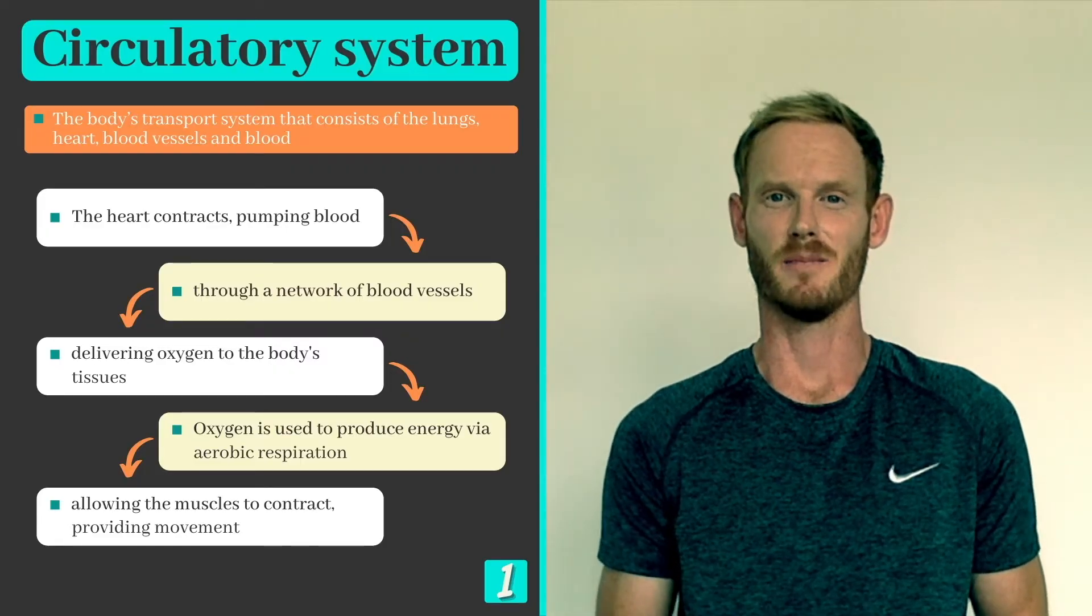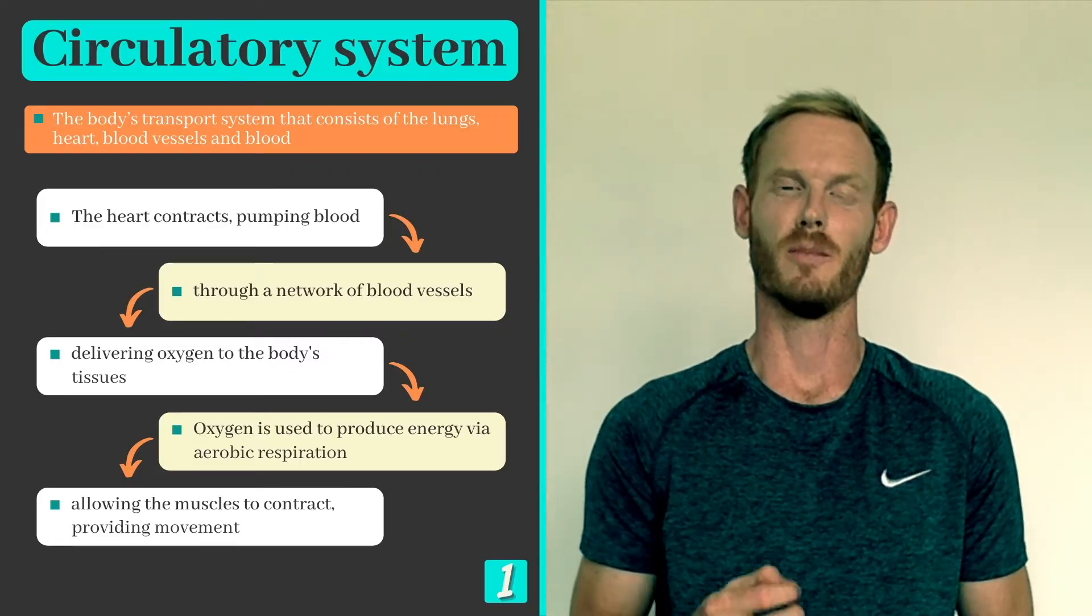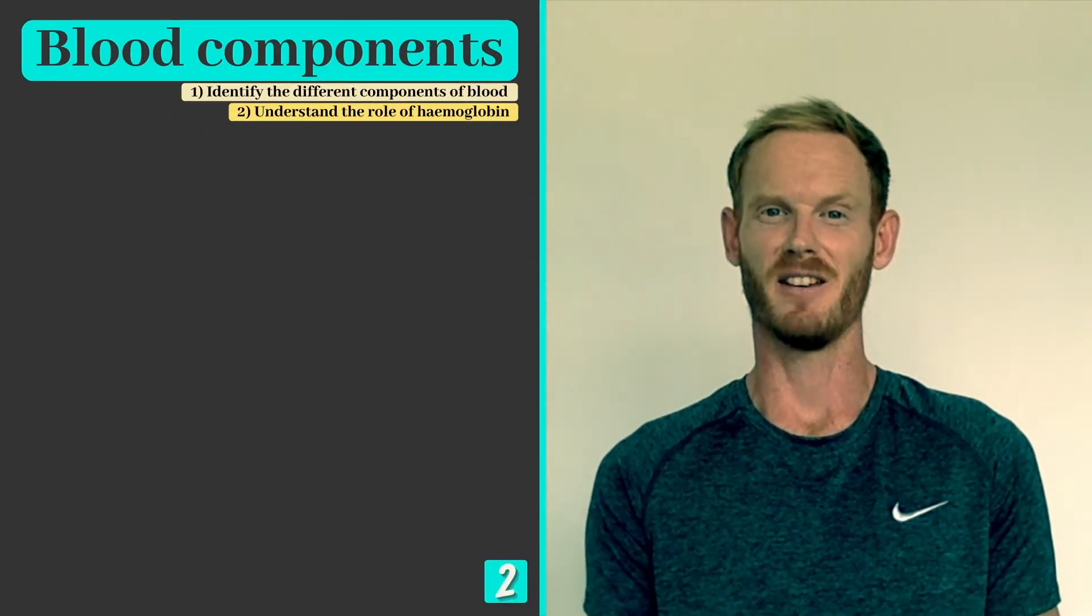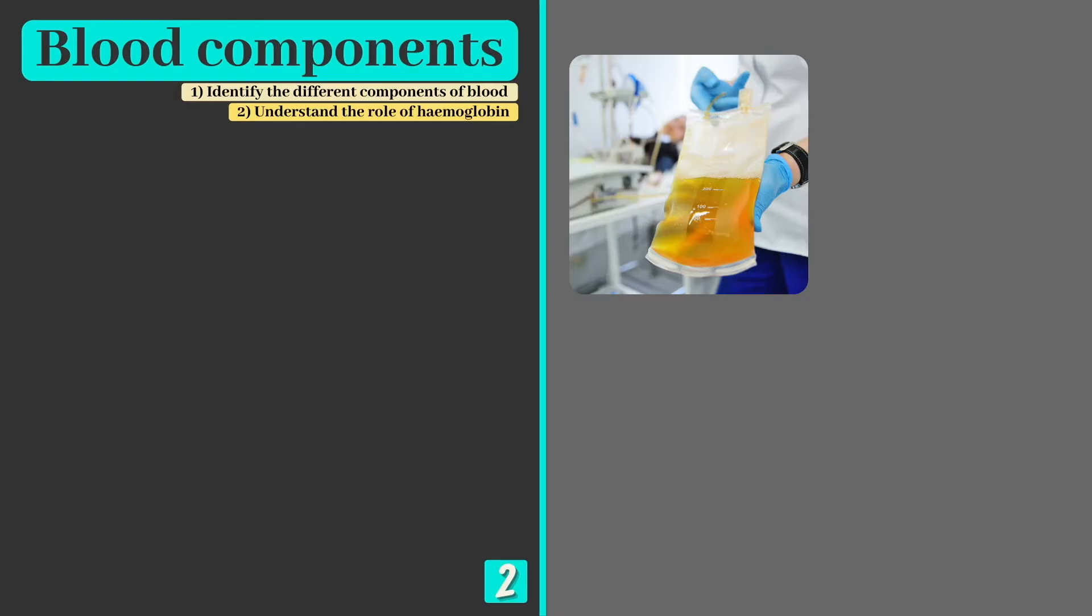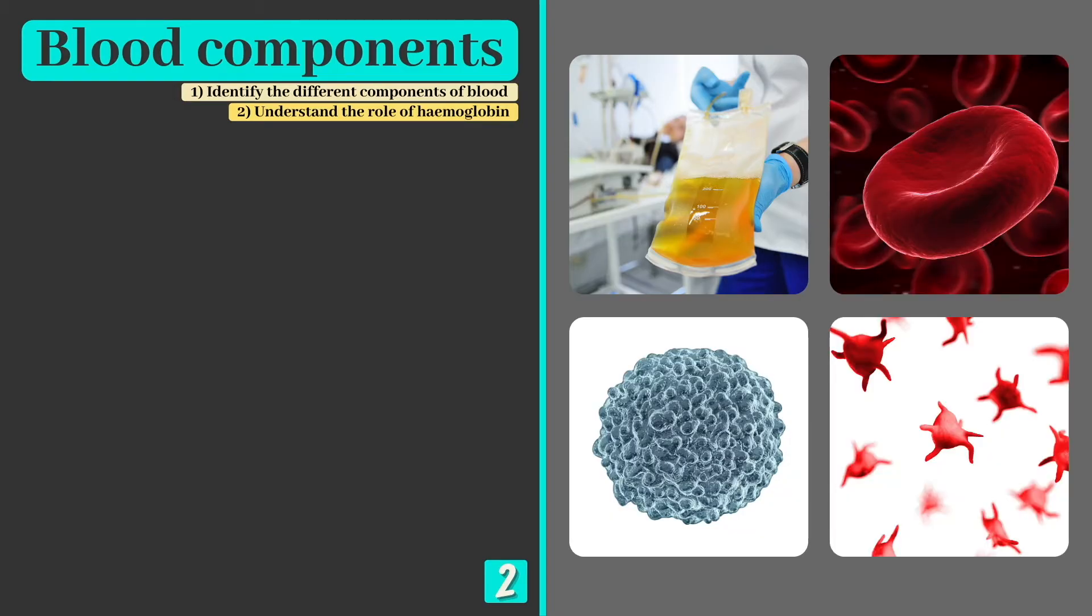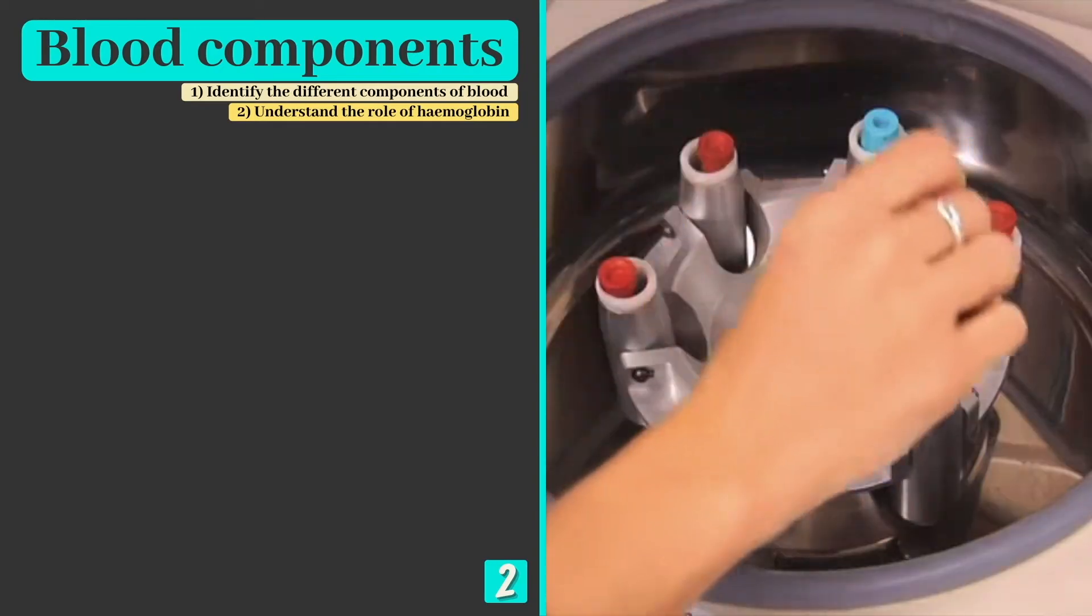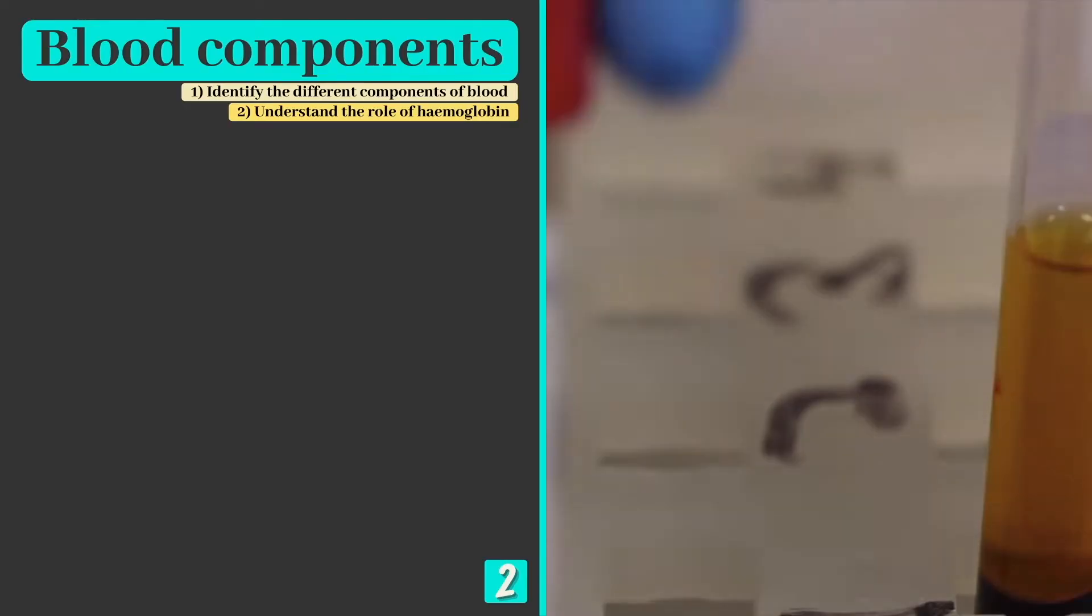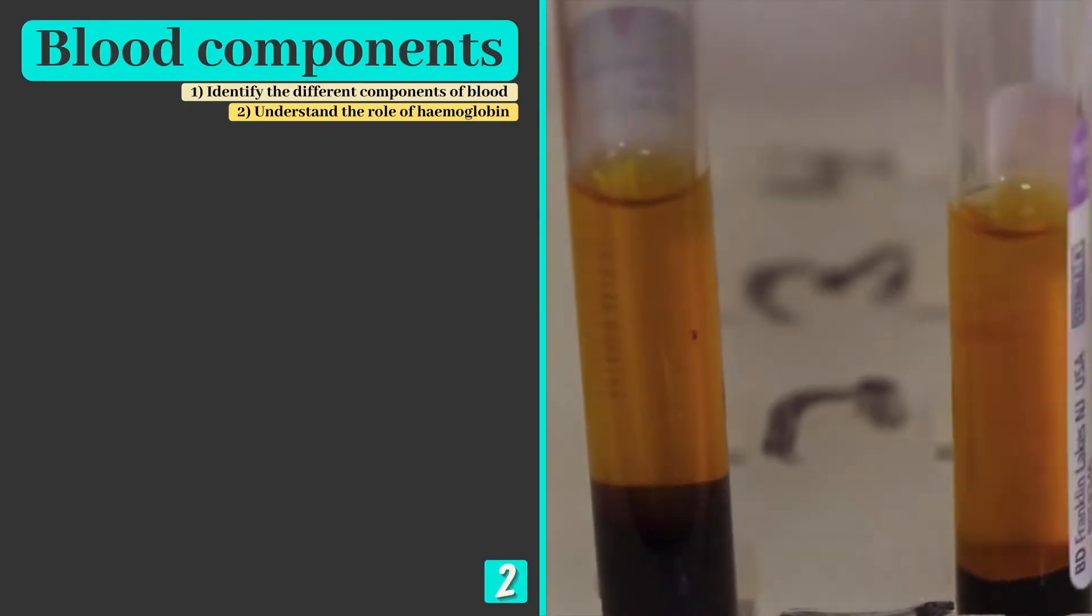Now we'll study the heart in our next lesson, but today we need to gain an understanding of the blood and the blood vessels. Put simply, blood is a liquid containing four components: plasma, red blood cells, white blood cells, and platelets, each of which have a specific role to play. It's actually possible to separate these components by spinning a blood sample in a centrifuge machine. The heavier components sink to the bottom, allowing us to see the relative proportions of each.